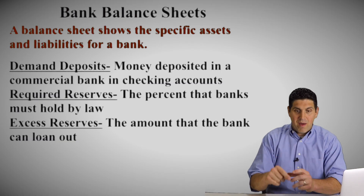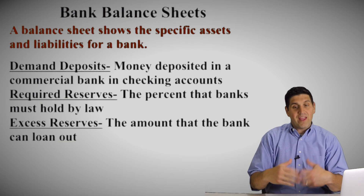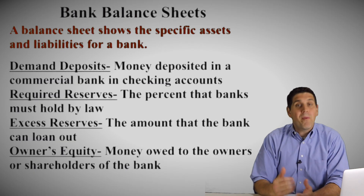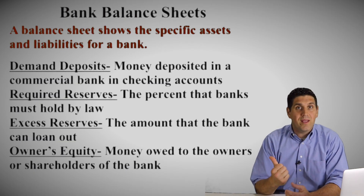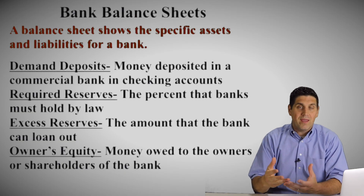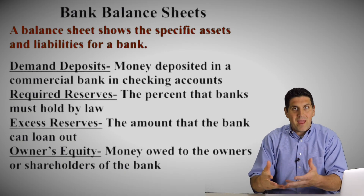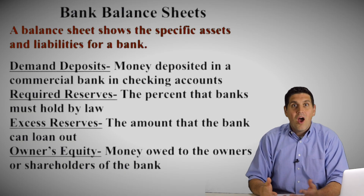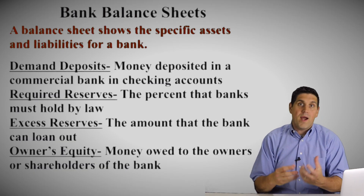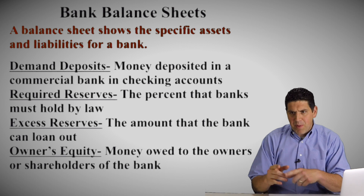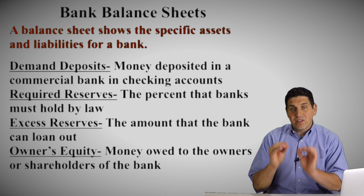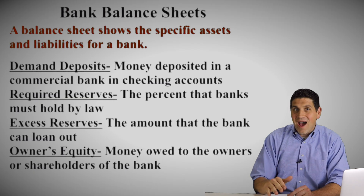Also, there's excess reserves, which is the money that's above their required reserves — they can loan out, but they haven't loaned out yet. Depending on the question, you might see the idea of owner's equity. Owner's equity is the amount of money that's owed to the shareholders or the owners of the bank — the amount of money that was put into the bank by the people who started the bank. Keep in mind, the owner's equity does not need to have any of it in required reserves. Only a portion of deposits that people have deposited are held in reserves, so they have to hold some of demand deposits but none of the owner's equity.